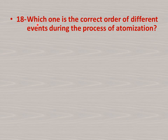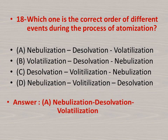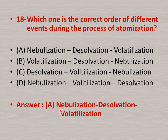Question number eighteen: which is the correct order of different events during the process of atomization? Option A: nebulization, then desolvation, then volatilization. Option B: volatilization, then desolvation, then nebulization. Option C: nebulization, then volatilization, then desolvation. Option D: nebulization, then volatilization, then desolvation. The right answer is A — first nebulization, then desolvation, and finally volatilization.